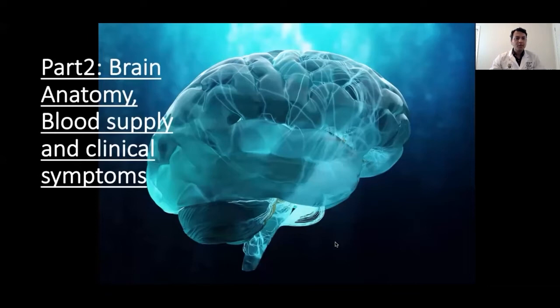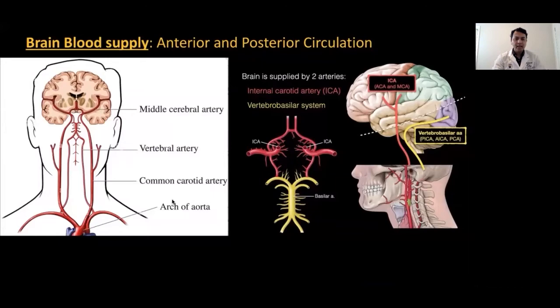Coming to the second part — brain anatomy, its blood supply, and some clinical symptoms based on that. The brain has an anterior circulation and a posterior circulation. The anterior circulation consists of two internal carotid arteries at the front, which divide into the middle cerebral artery and the anterior cerebral artery. The two arteries at the back are called the vertebral arteries; they join together to form the basilar artery. The artery at the front is the internal carotid artery, and the arteries at the back are the vertebral arteries.